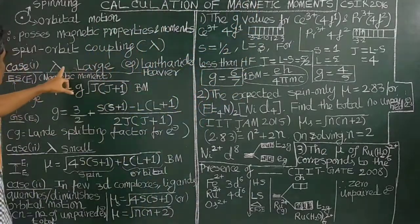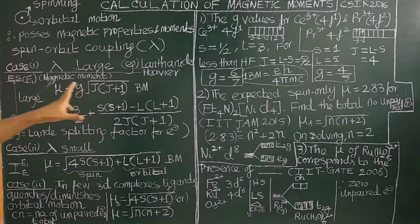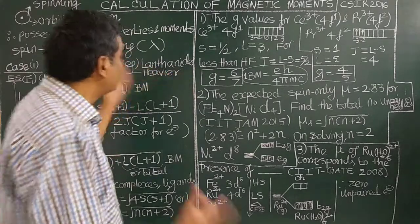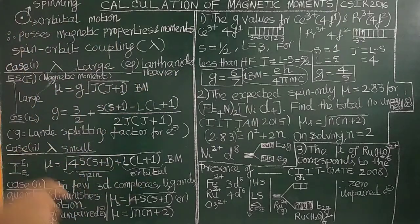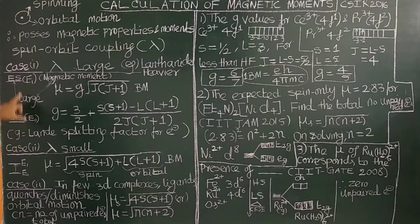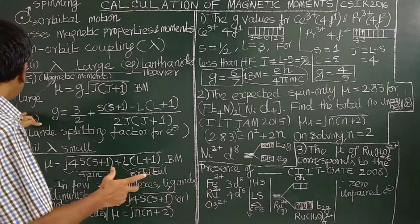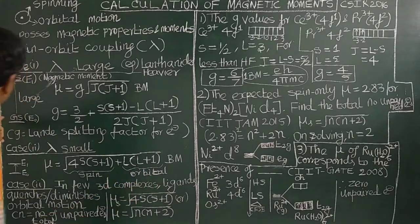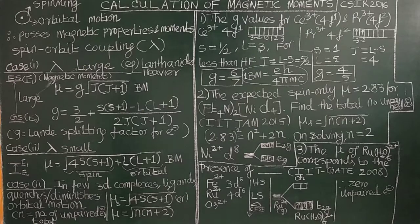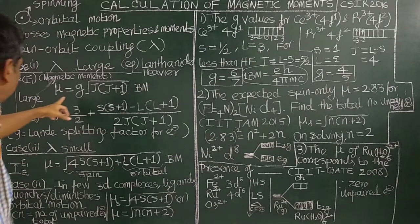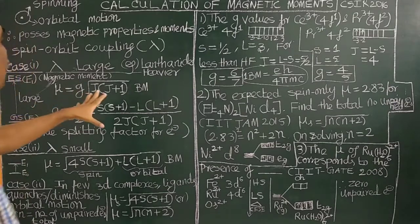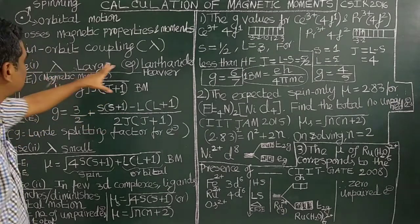There are three cases. Case one: lambda is large. When lambda is large, this applies to heavier elements. The difference between the ground state and the excited state is also large. When the spin-orbit coupling is large, the difference between the ground state and the excited state is also large.